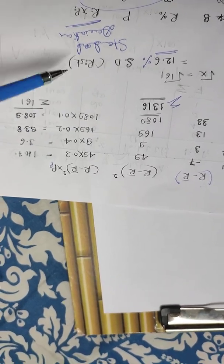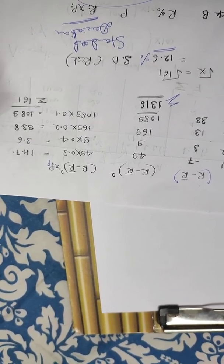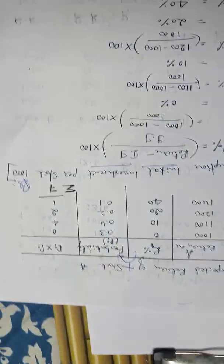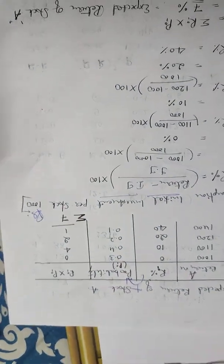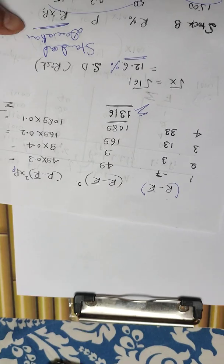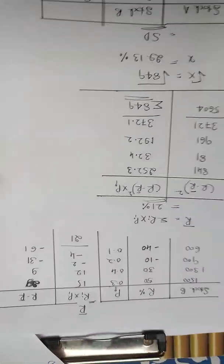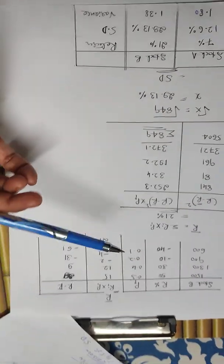So for stock A, the expected return is 7% and the standard deviation (risk) is 12.6%. Now we will do the same calculation for stock B.